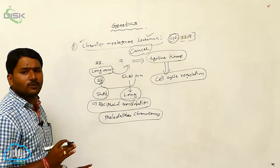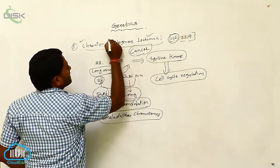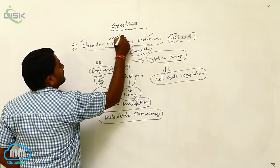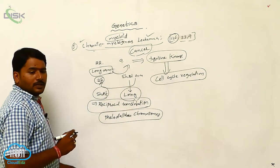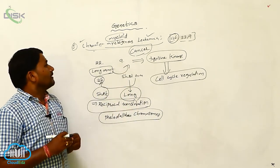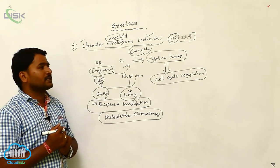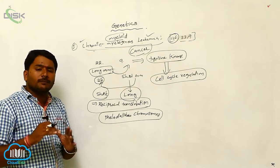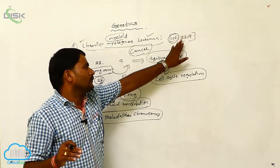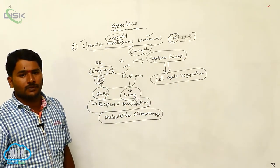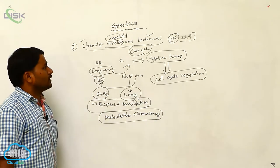Leukemia means WBC cancer. Instead of myelogenous, we can call it myeloid — chronic myeloid leukemia. This is only due to the exchange of parts of chromosomes between the 22nd and 9th. But the chromosomal number is not changed. The karyotype is not changed; as usual, 46 chromosomes are present. This is about chronic myelogenous leukemia.